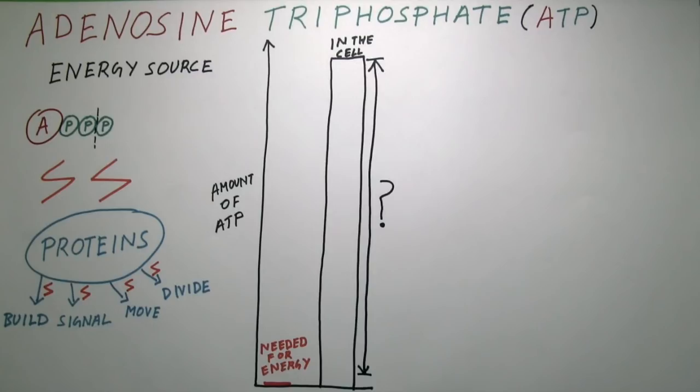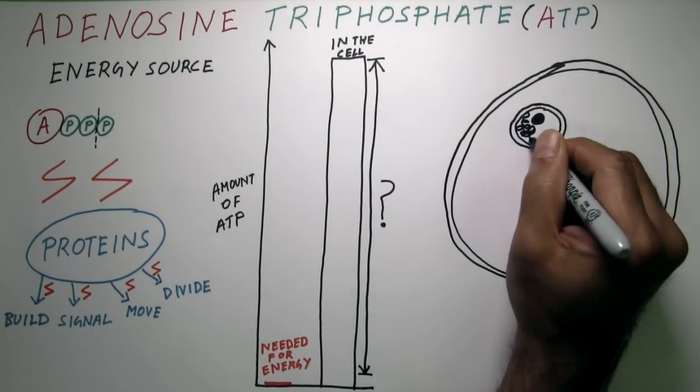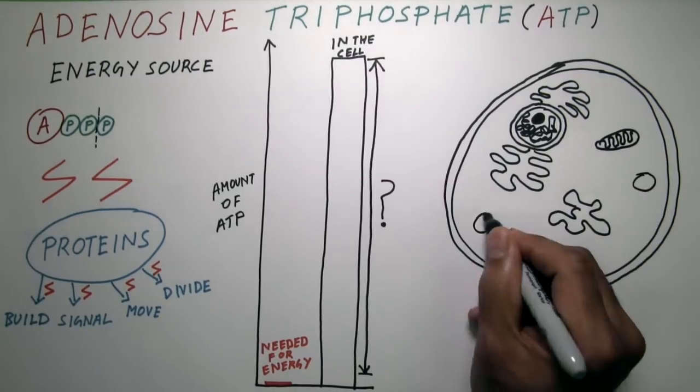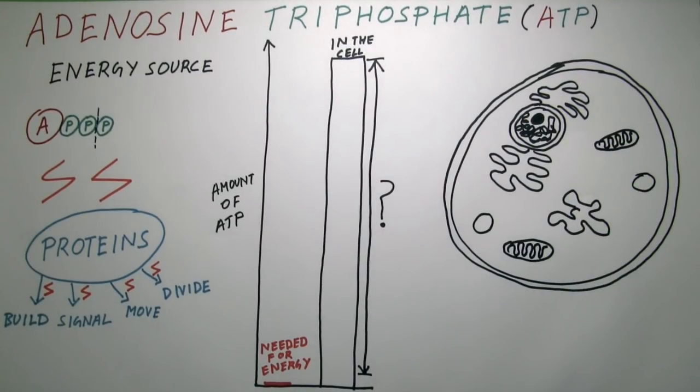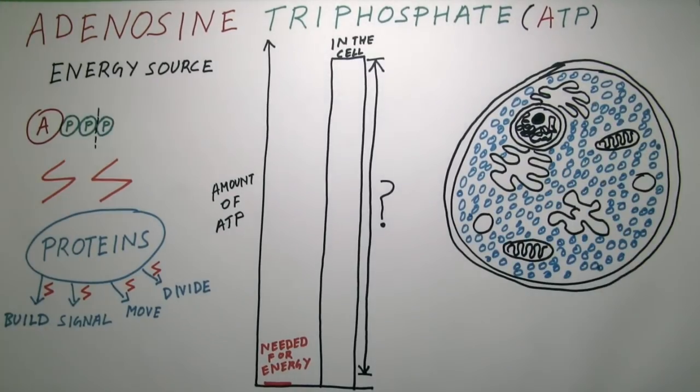We discovered a second energy-independent role for ATP in keeping the inside of a cell functional. It turns out that the inside of a cell is not as spacious as it looks in textbook diagrams. It's actually really crowded with proteins.